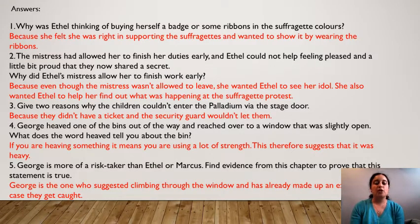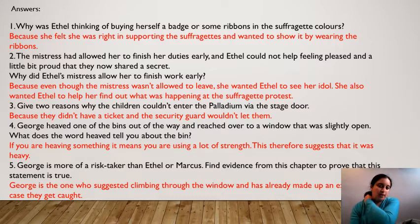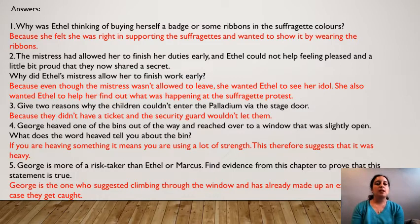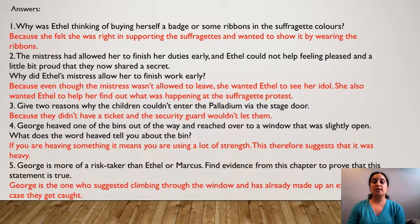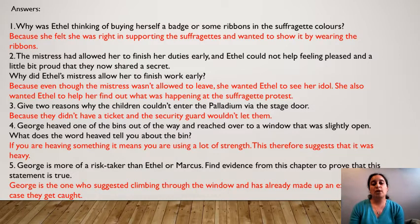I hope you found that okay, not too difficult. I know the end question might have been a little bit tricky but I'm hopeful you managed quite well. So let's go through the answers. Number one: why was Ethel thinking of buying herself a badge or some ribbons in the suffragette colours? She felt it was right to support the suffragettes. As we saw in the previous chapter, she had learnt from the mistress that suffragettes are a group of people that are really important and their message is very important to women. She's decided she really does love what the suffragettes stand for and she wants to wear the ribbons to show her support.